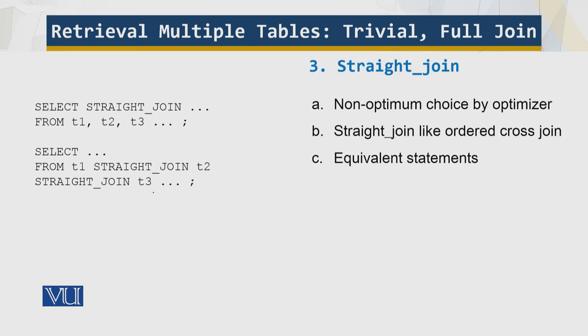A join performed with straight join is like a cross join, but forces the tables to be joined in the order named in the from clause. So over here, we have this, you can see straight join from, this is the optimal choice, which is going to be there from T1 join T2 straight join over here.